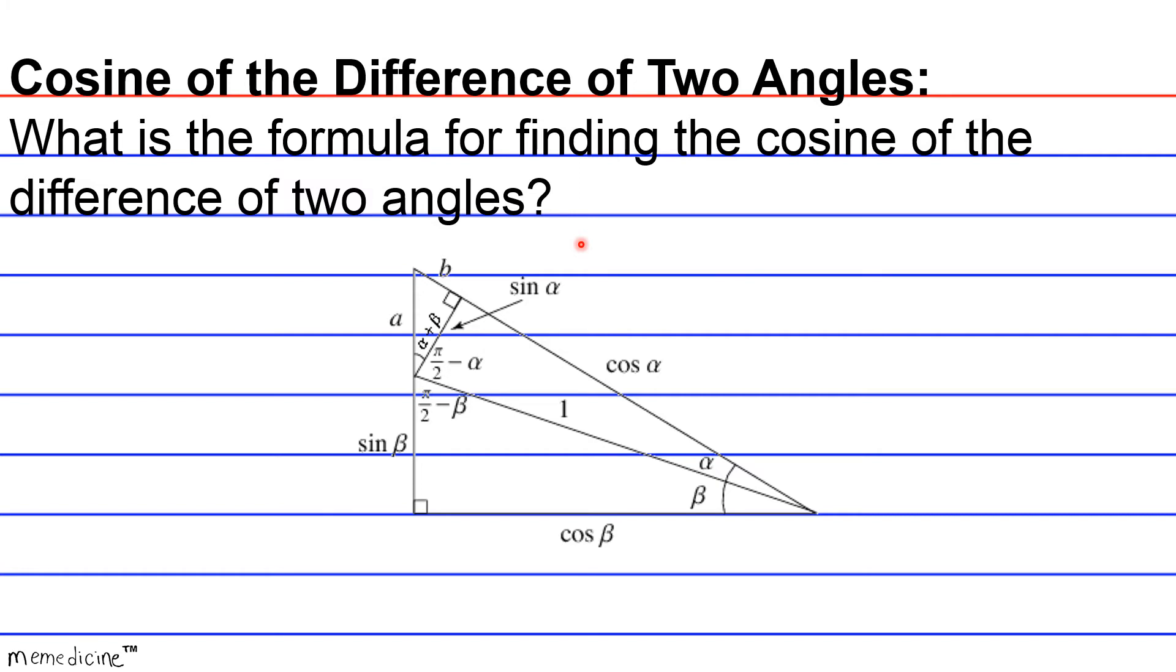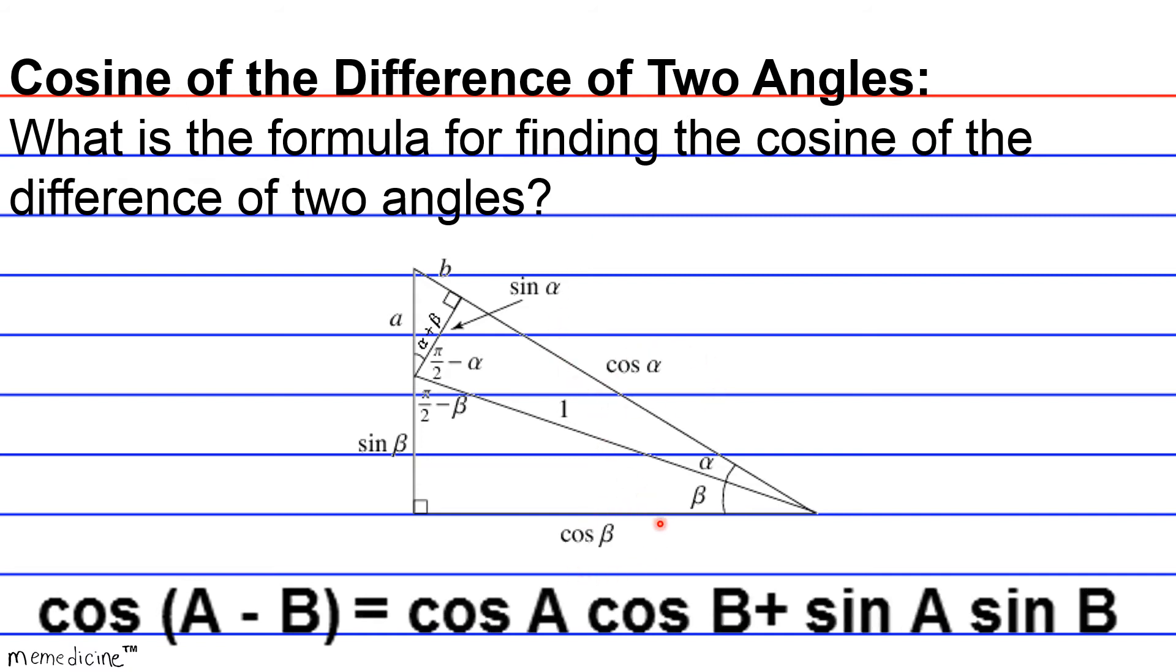All right. The cosine of the difference of two angles is going to be equivalent to the cosine of A times the cosine of B plus the sine of A times the sine of B.